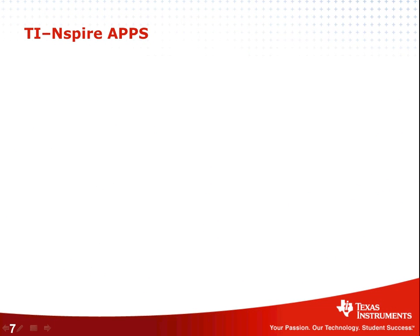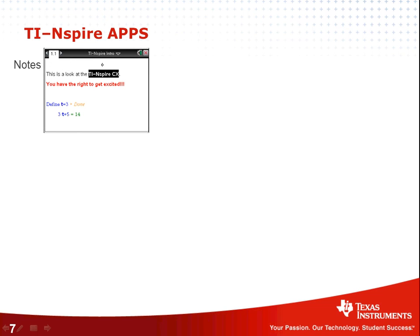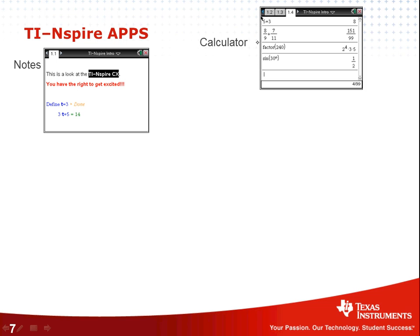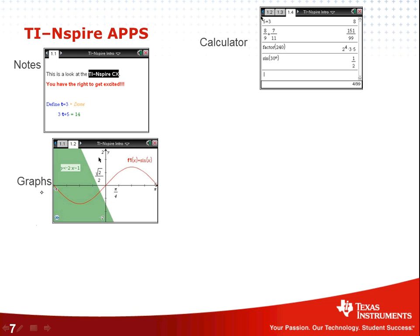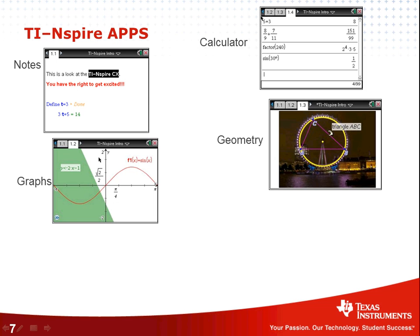Let's take a look at the applications. The big apps are Notes — this says it's a look at the TI-Nspire CX and you have the right to get excited. Notes pages can do math dynamically, where if you change how it's defined, it will update it elsewhere. Calculator — look at those fractions, aren't those beautiful? The exponents look like they're supposed to. The graph page in beautiful color. Notice that we can do inequalities so easily. On a graph page, if you press backspace or delete one spot, up will pop your choice of which inequality you would like to use. We can have the tick marks on the TI-Nspire CAS as pi over 4 or square root of 2 over 2 — that's a nice feature of the CAS.